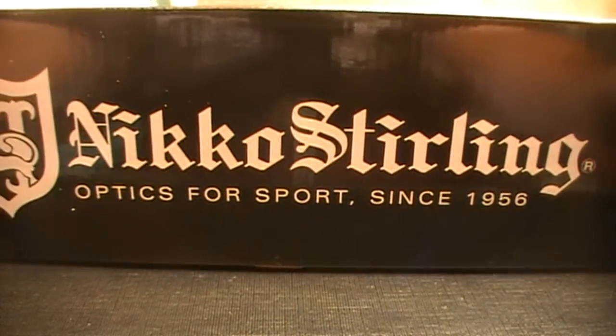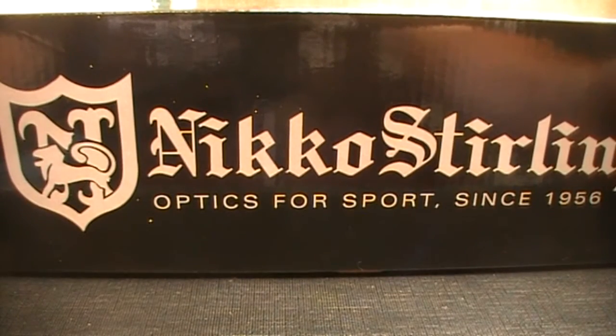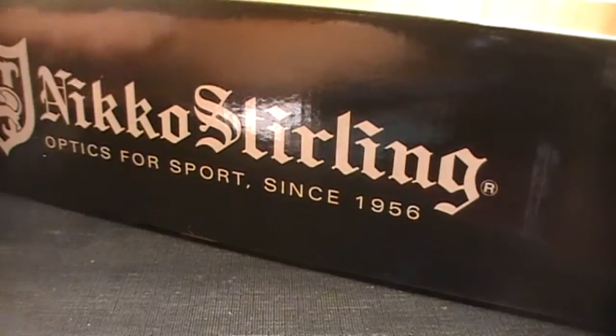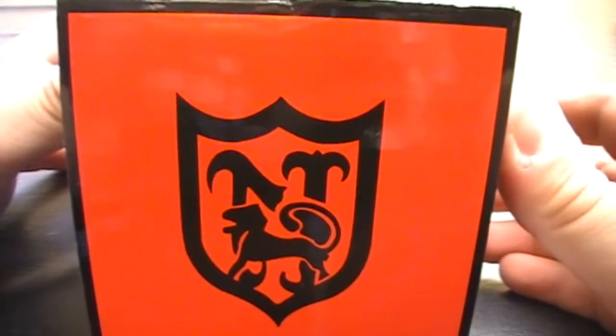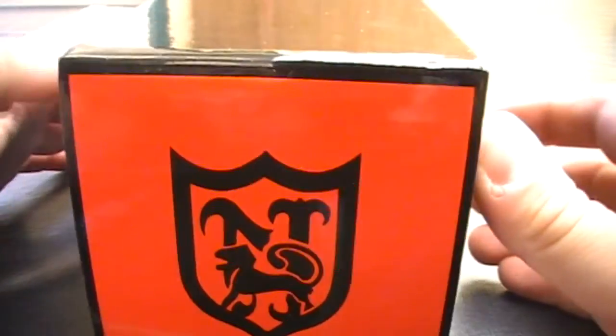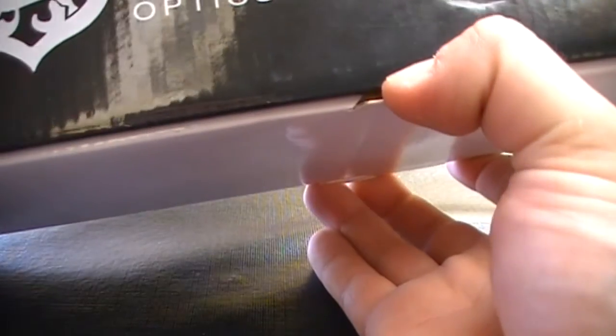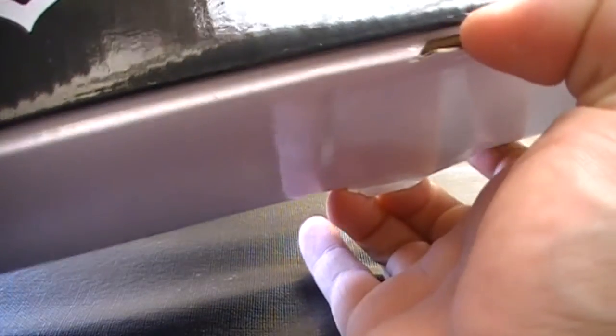When I first started 4 years ago, I bought a Nikko Sterling in the Night Eater series and sold them for better optics. The box has two little tabs here for easy access to pull the box off by pulling these two down.